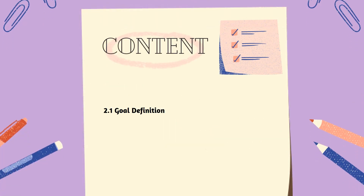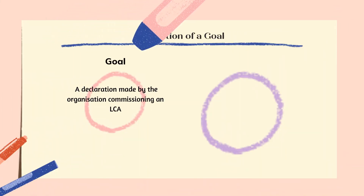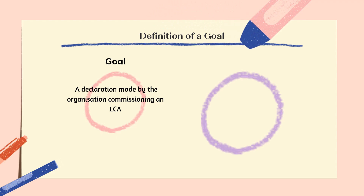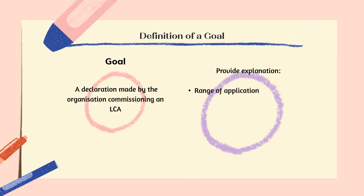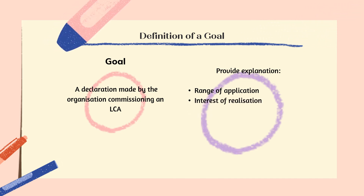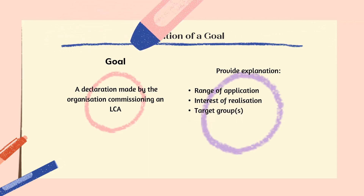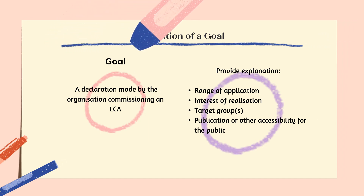The first one: Goal Definition. The goal definition is a declaration made by the organization, such as companies, industry or trade associations, environmental offices, NGOs, etc., commissioning an LCA, by providing an explanation to the following: range of application — for example, what is the objective of the study; interest of realization — such as why is an LCA study conducted; target groups — for whom will an LCA study be conducted; and publication or other accessibility for the public — are comparative assertions intended in the study. The depth and accuracy of the study have to be considered during the goal definition.